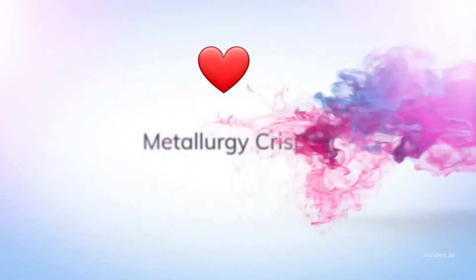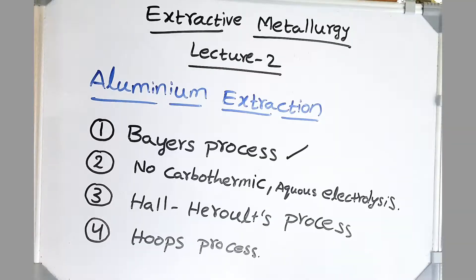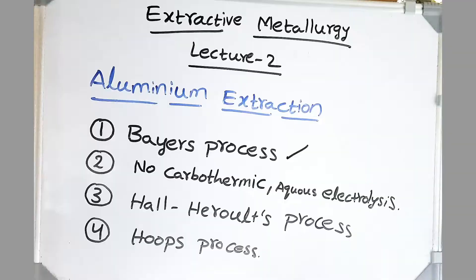Hello friends, hope you are doing well. Welcome to our channel Metallurgy Crisp. This video is much more than Bayer's process and Hall-Héroult's process. We are going to understand every aspect of aluminum extraction. We start with Bayer's process, then discuss why we can't produce aluminum using any other methods, then Hall-Héroult's process, then purification of aluminum, the problems faced by the aluminum industry, and the anode effect. This is lecture number 2 of the Extractive Metallurgy Lecture Series.